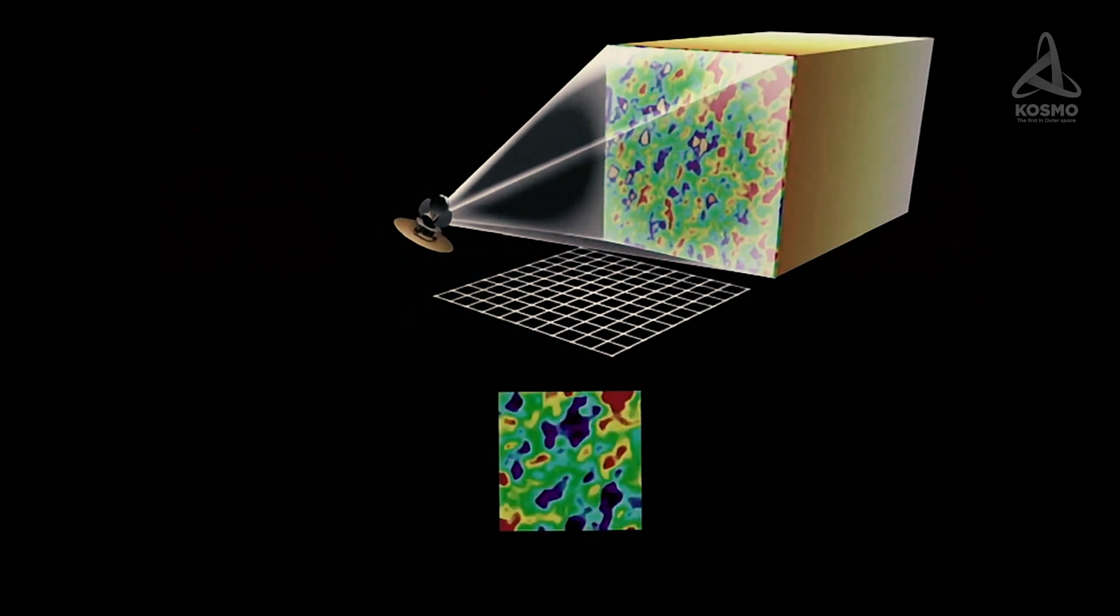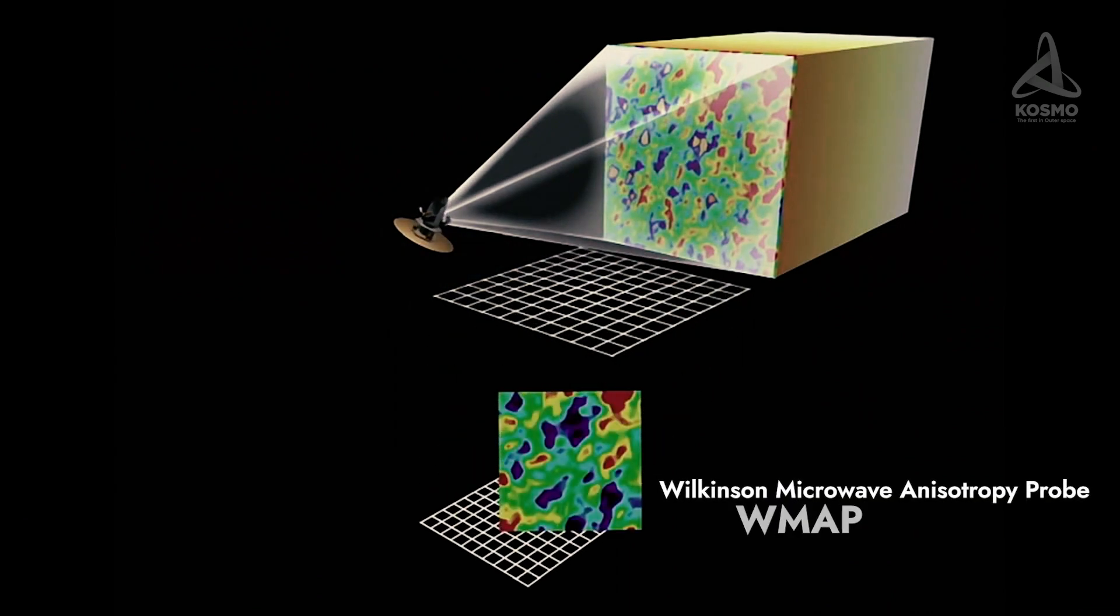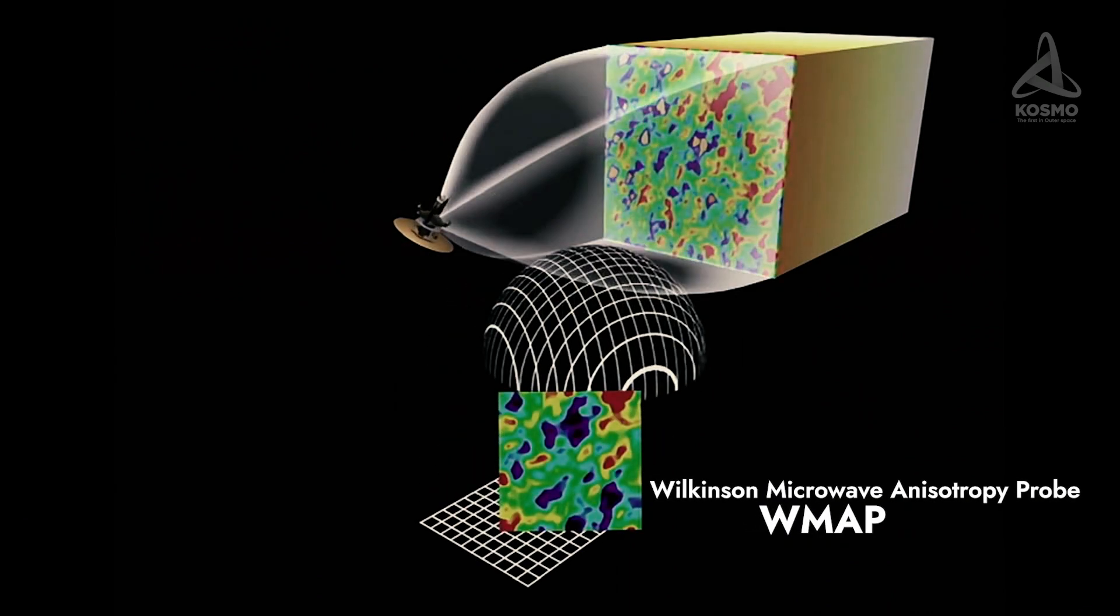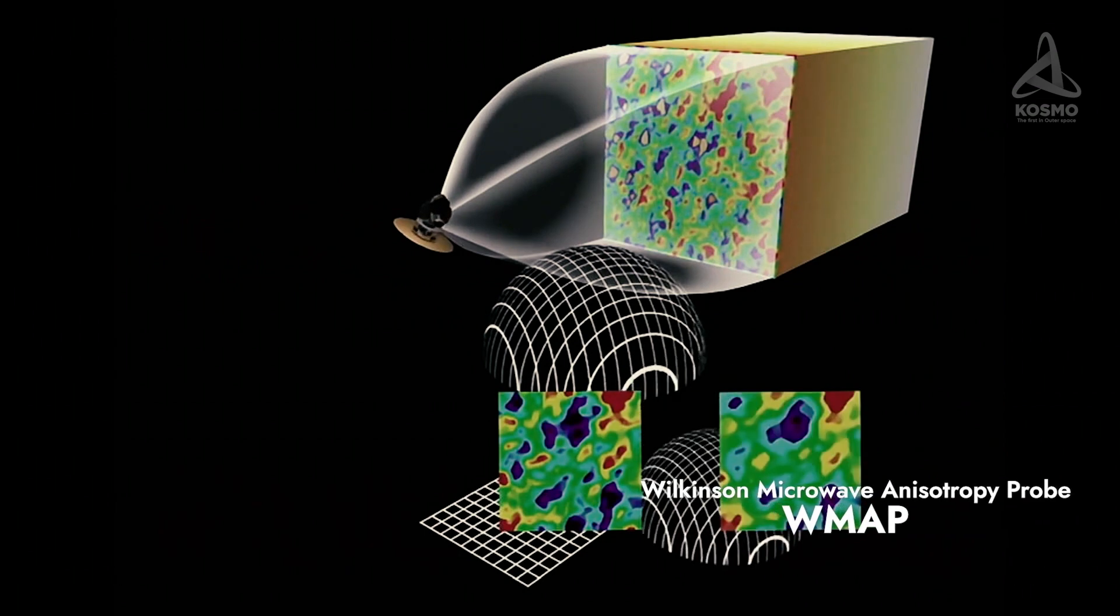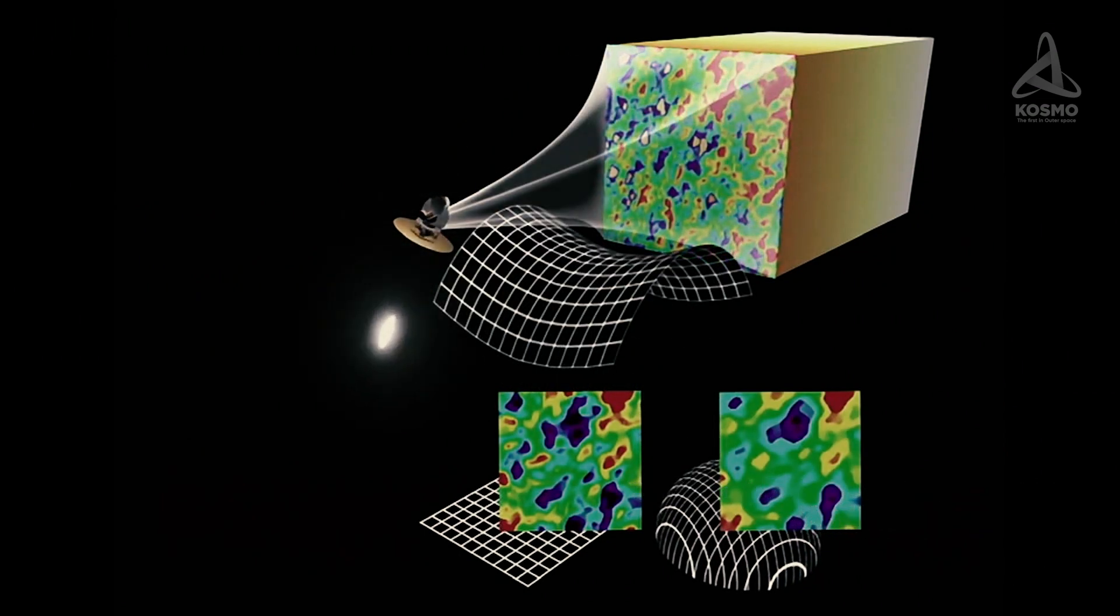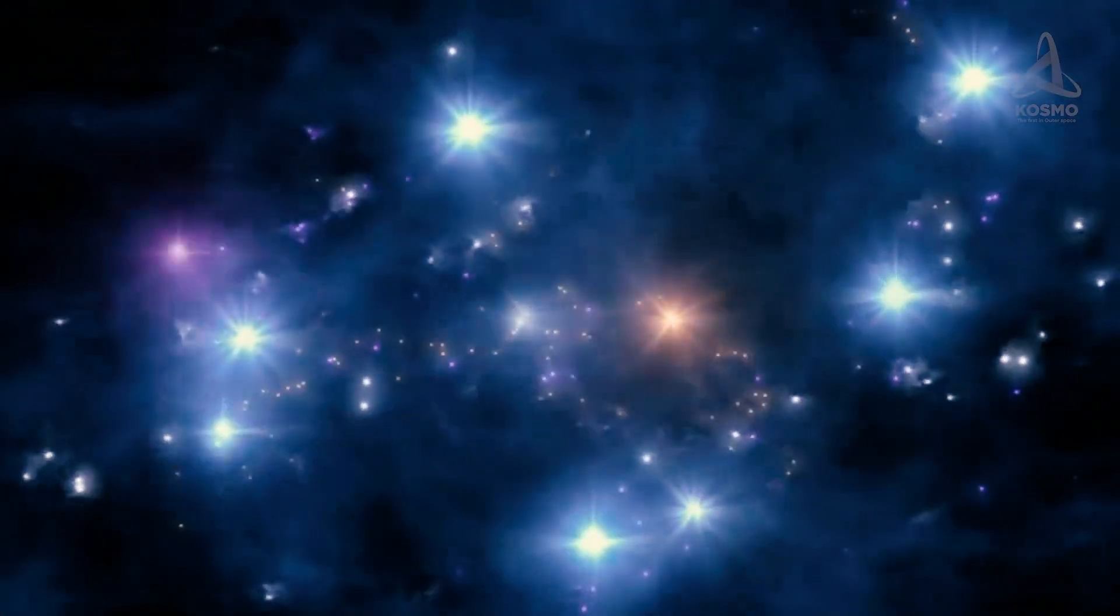The discovery was made thanks to the analysis of data collected by the Wilkinson Microwave Anisotropy Probe, or the WMAP, whose mission was to study the CMB radiation. The discovery was made possible thanks to Alexander Kashlinski, Fernando Atrio-Barandella, Daniel Kotsevsky, and Harold Ebeling.